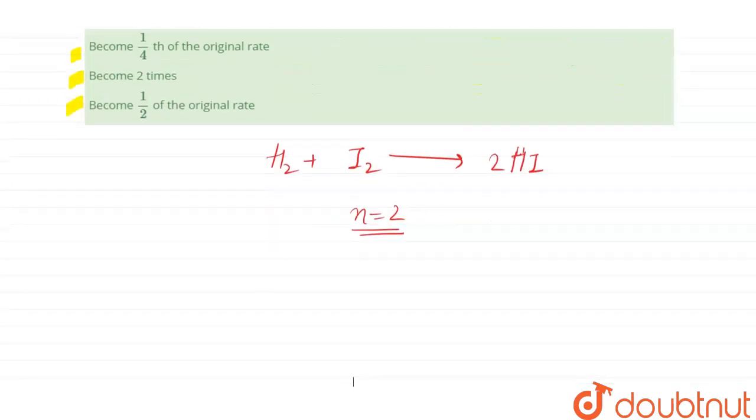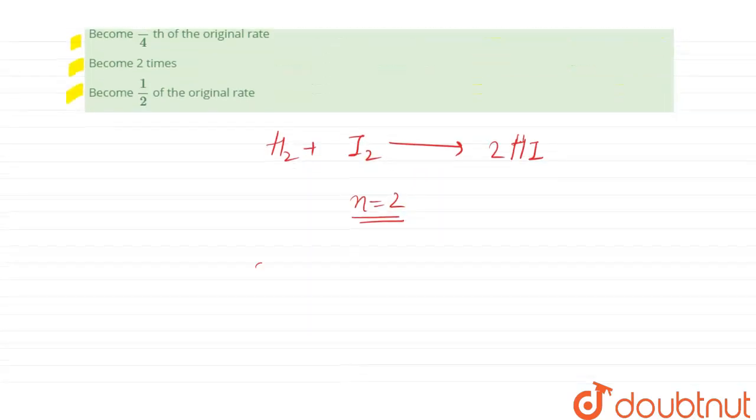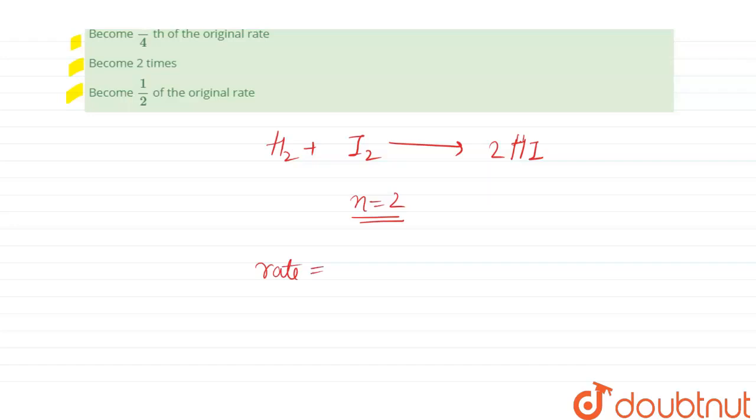Can we write the rate law for this reaction? The rate will be equal to K times concentration of H2 times concentration of I2. This is the rate when the volume is not increased.